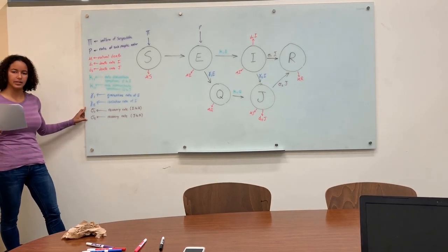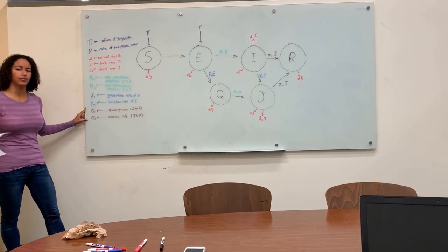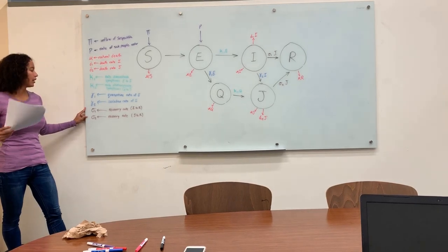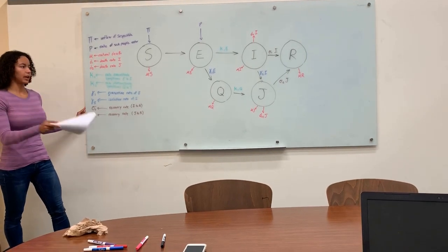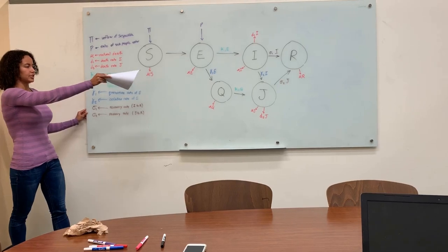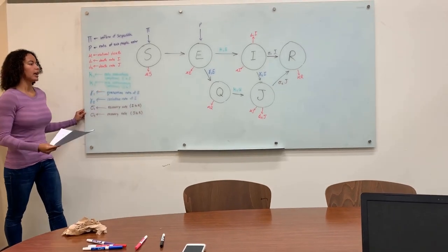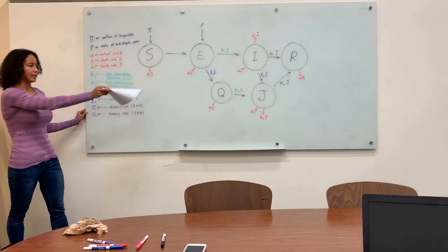Lastly, we have the recovery rates. You can only recover if you have the disease and show symptoms. So our recovery rates are sigma 1, which is from symptomatic to recovered, and sigma 2, which is from isolated to recovered.